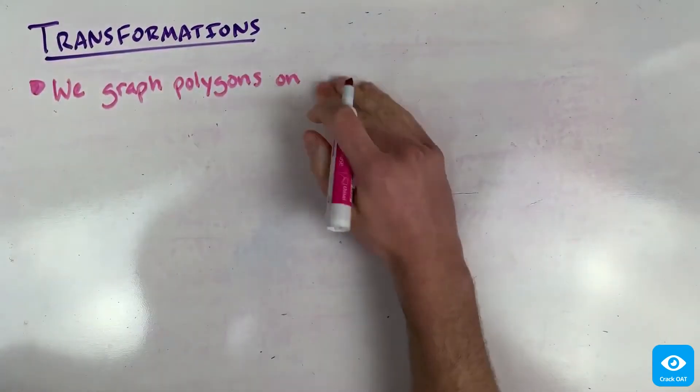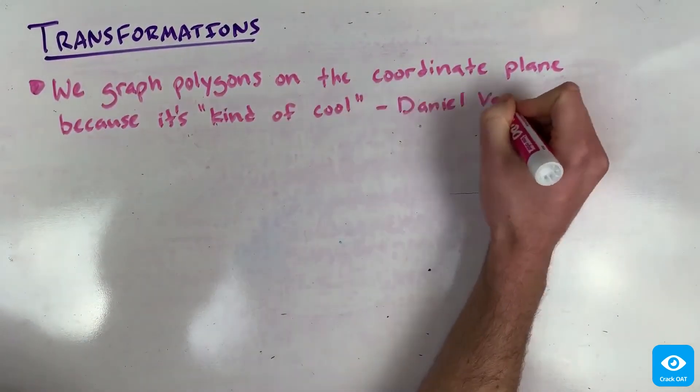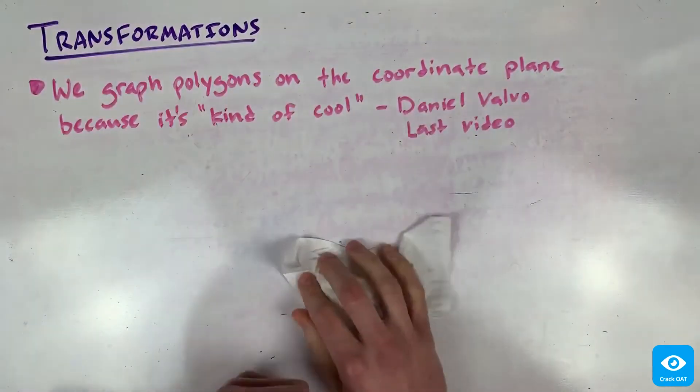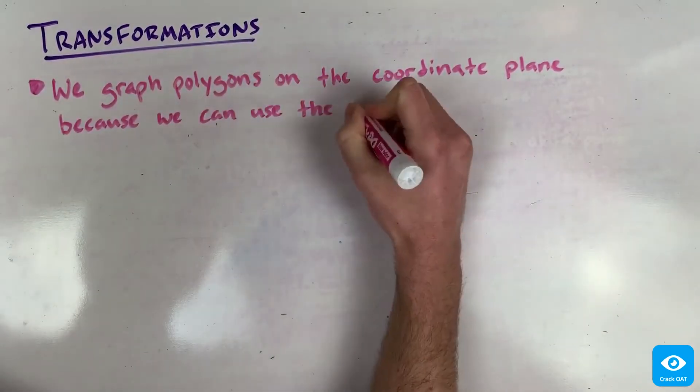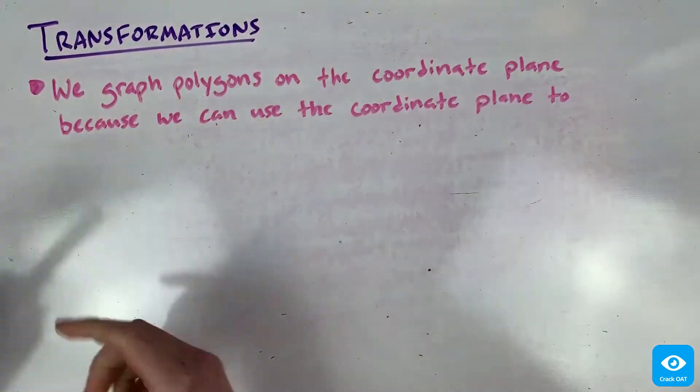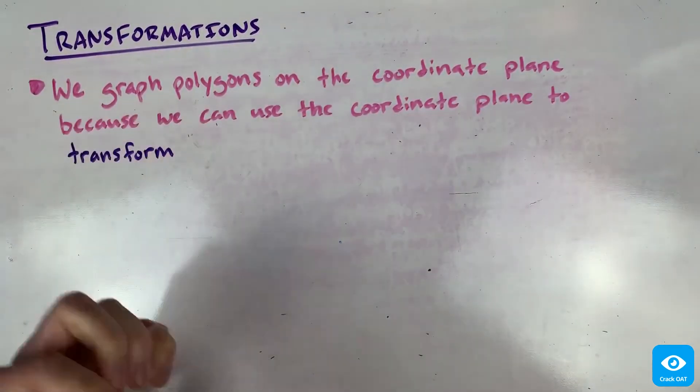Remember last time we talked about graphing polygons and I said it was kind of cool? Well, we just didn't graph polygons in the coordinate plane for no reason. We care about graphing polygons in the coordinate plane because we can use the coordinate plane to transform shapes like you've never seen before.